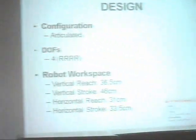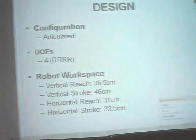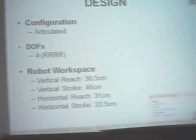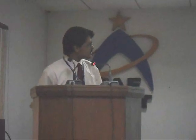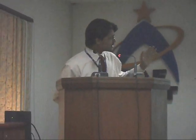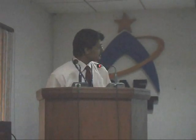Now, the design. We definitely know that there are different kinds of configurations in robots, which are polar form, reticular form, mascara, and so on and so forth. We have chosen an articulated robot, which has degrees of freedom for revolute joints.